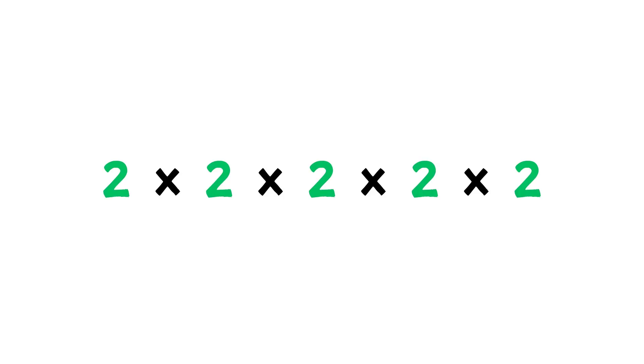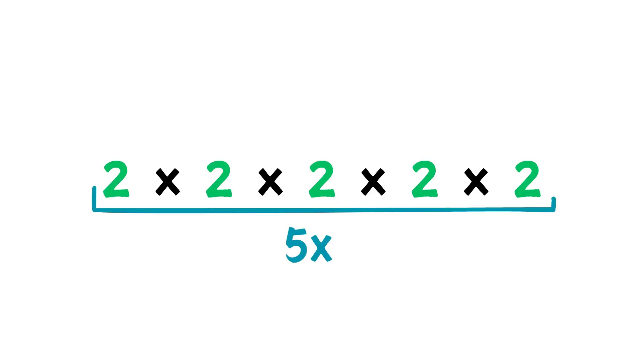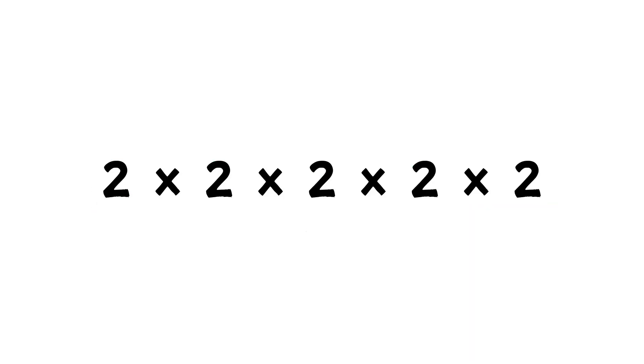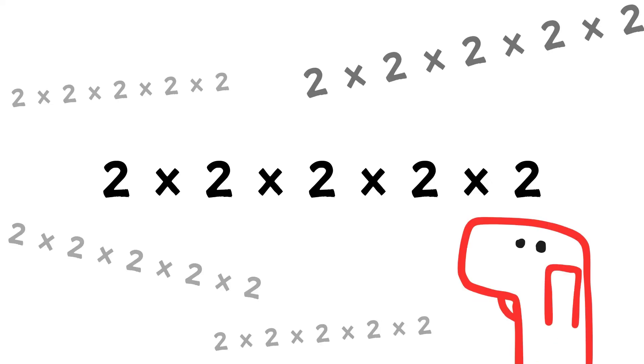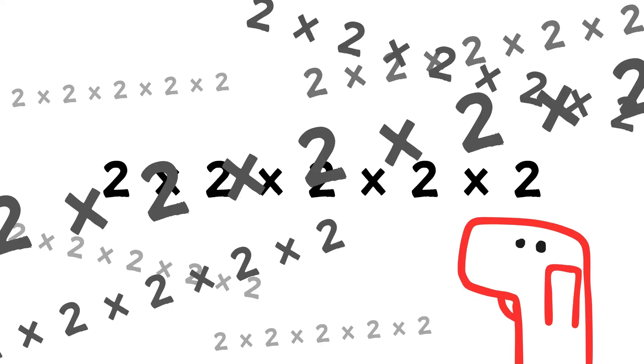Say we wanted to write an expression where 2 is multiplied together 5 times. The notation we have is very cumbersome, and if we wanted to write this expression multiple times, you could imagine how much time it would consume.